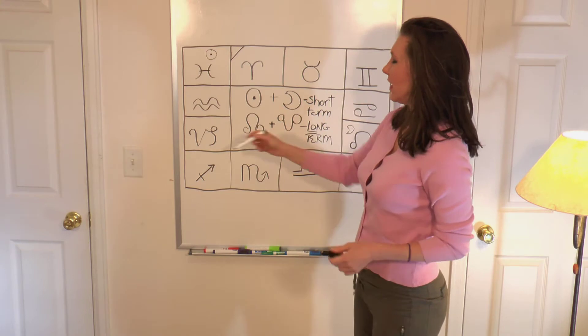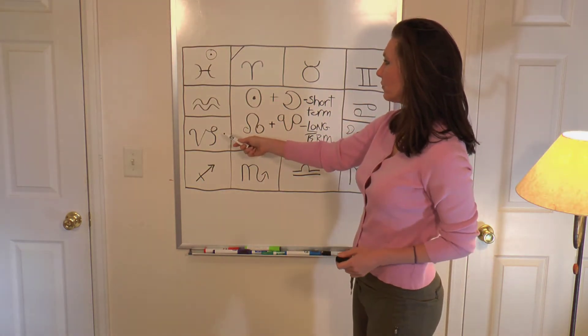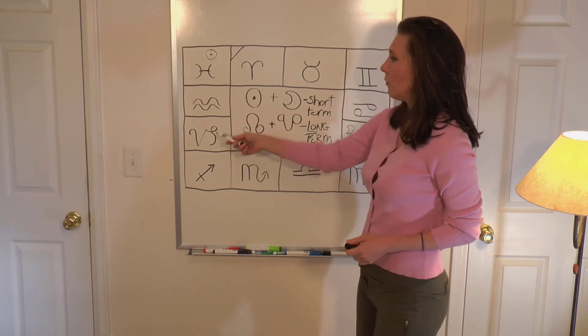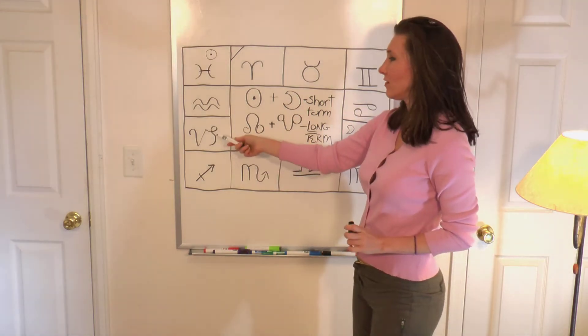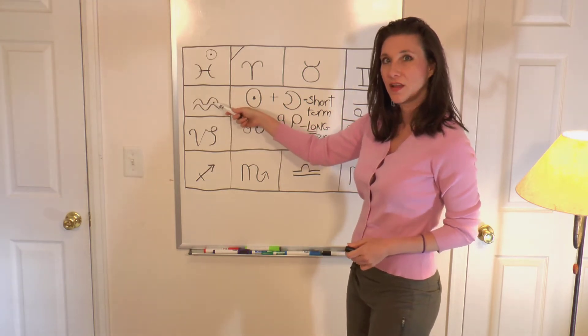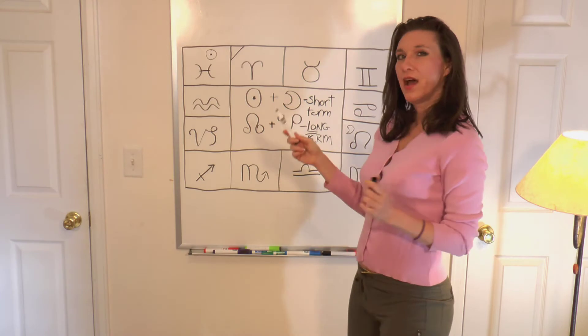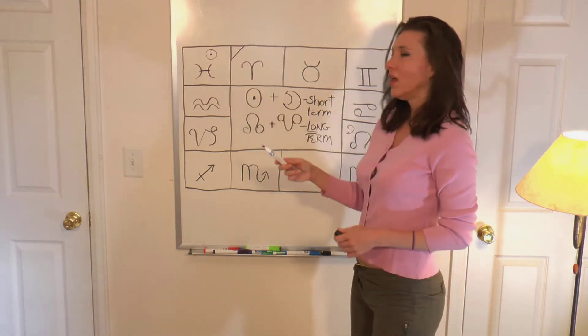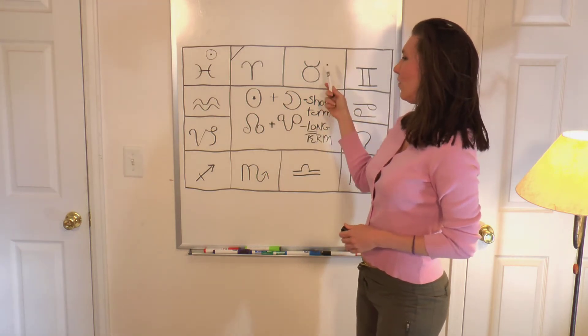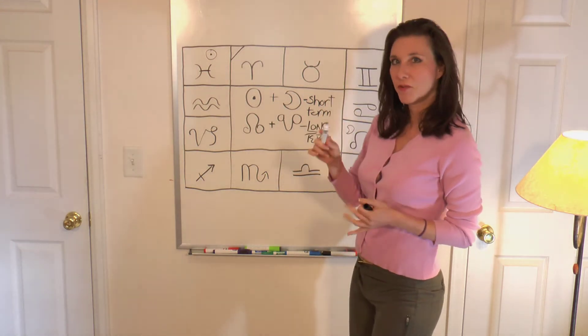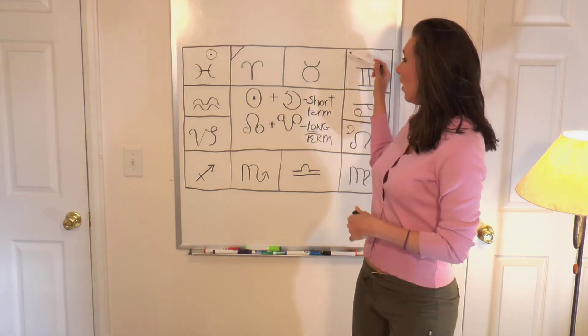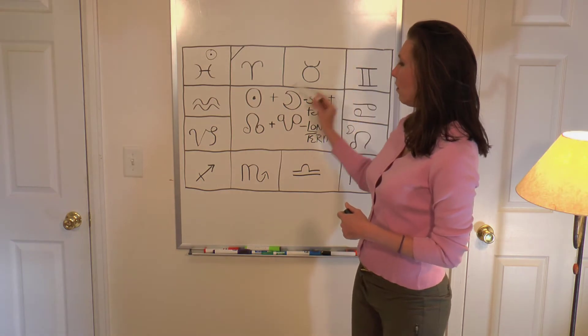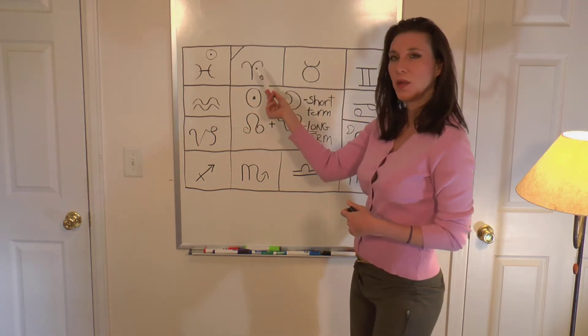And then let's say Capricorn aspects Taurus, Leo, and Scorpio, but he does not aspect Aquarius, which is the fixed sign next to him. And then now the fixed signs, which is Taurus, Leo, Scorpio, and Aquarius, these signs aspect the cardinal signs, except for the one next to them. So Taurus will aspect Cancer, Libra, and Capricorn, but he will not aspect Aries.